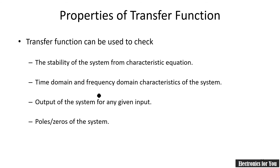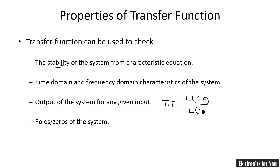Let us now talk about the properties of transfer function and where it can be used. Transfer function can be used to find the stability of a control system — this is the most important application. Time domain and frequency domain characteristics of the system can also be found. The output of the system for any given input can be determined using the transfer function. If we know the transfer function and the Laplace transform of the input, we can find the Laplace transform of the output, and by taking the inverse Laplace transform we get the exact output. Furthermore, poles and zeros of the system can be found using the transfer function.